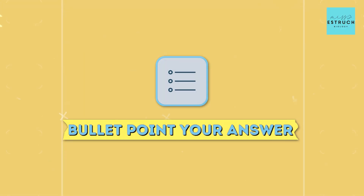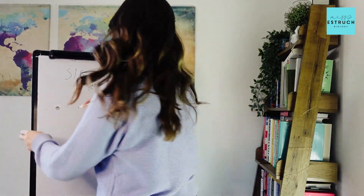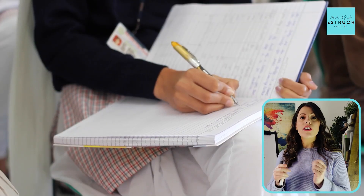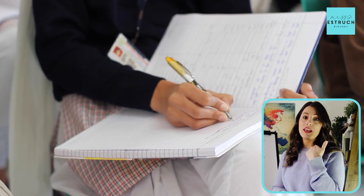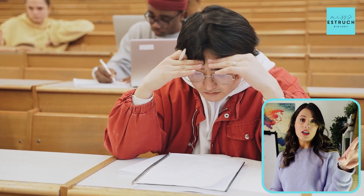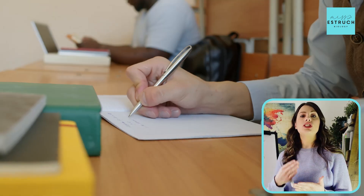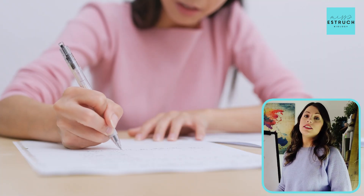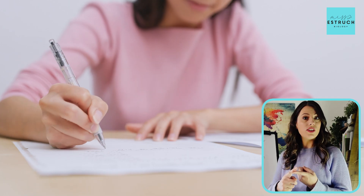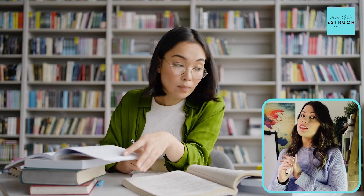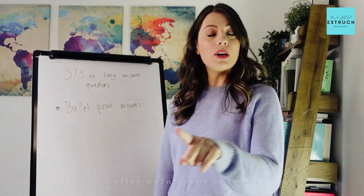Step number one is bullet point your answer. The advantage of doing bullet points is first of all it's going to be so much quicker than writing long lengthy paragraphs. Number two, it's going to be easier for you to check your answer at the end — you can look through the bullet points and check if you've got a key marking point in each one. And it also makes it easier for the examiner to mark, and if it's easier for them to mark they are less likely to make a mistake. So bullet pointing your answers is going to make you write a higher quality answer.